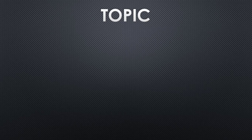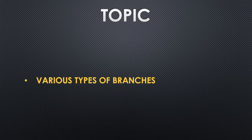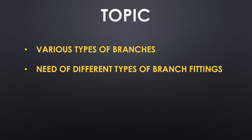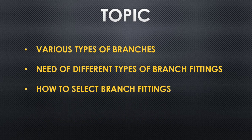In today's video we are going to address three important areas of piping branches. The first one is the different types of branch fittings available. The second important area is the need for different types — we must understand the purpose of each fitting type, otherwise you may not be using the right one at the appropriate location. The third important area is how to select the branch fitting for a particular location, size, and branch size.